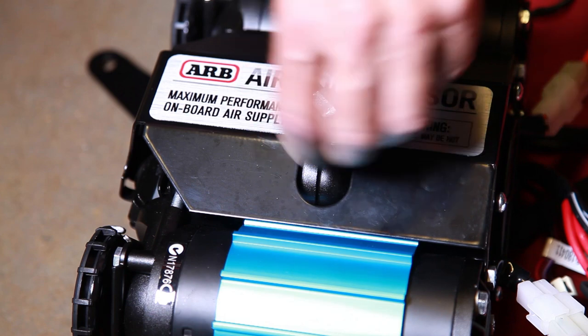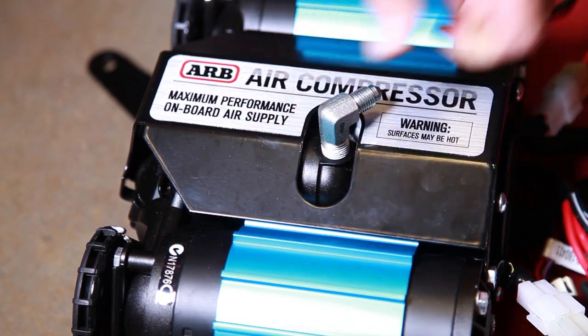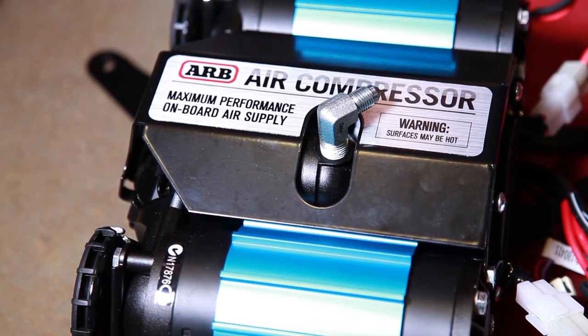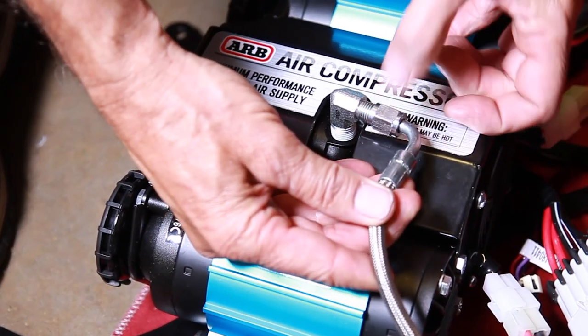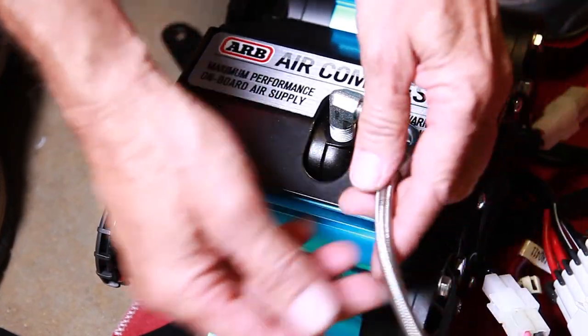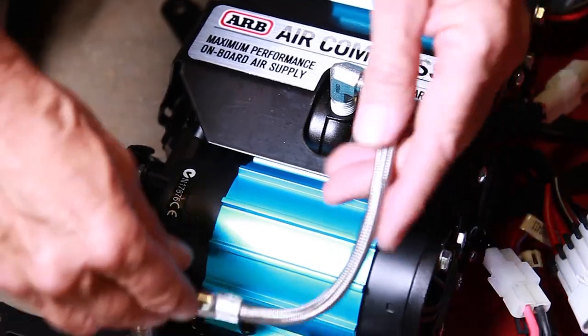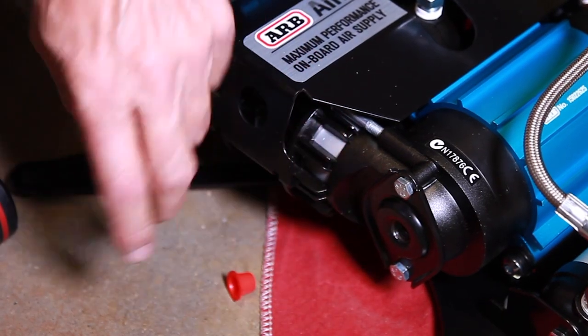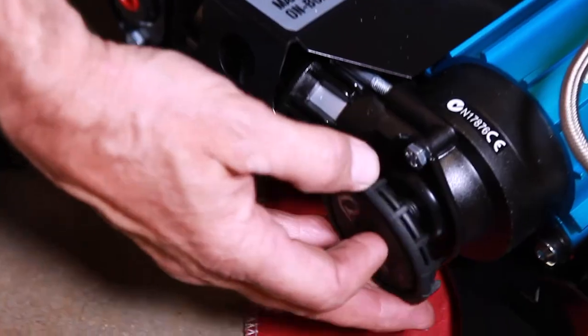Teflon tape and install the provided 90 degree fitting into the compressor blowhole. We'll final tighten when the hose angle is established, so go ahead and loosely install the pressure line. Now is as good a time as any to install the compressor filters. Wind them in by hand.